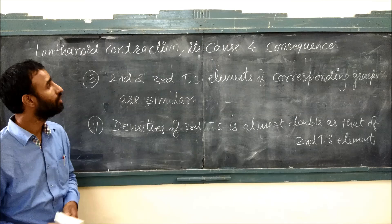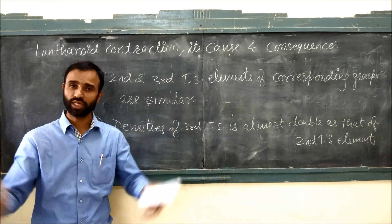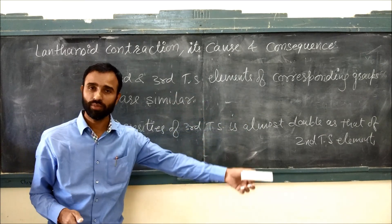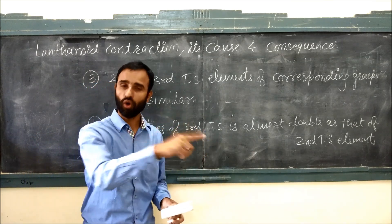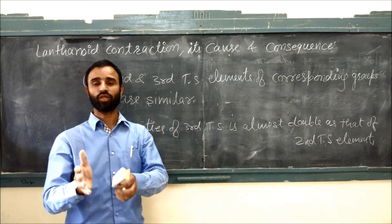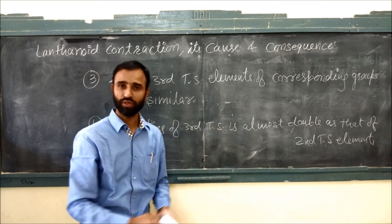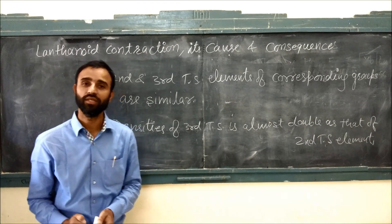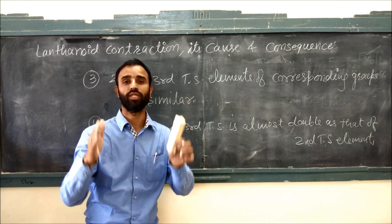These are the four consequences of lanthanoid contraction. Let us recap the whole concept. Lanthanoid contraction is the steady decrease in size of lanthanoid elements with the increase in atomic number, caused by poor shielding of 4F orbital electrons. The four consequences are: first, basic character of hydroxides decreases along the series; second, separation is difficult; third, second and third transition series elements have almost the same size; and fourth, densities of third transition series are double those of the second.